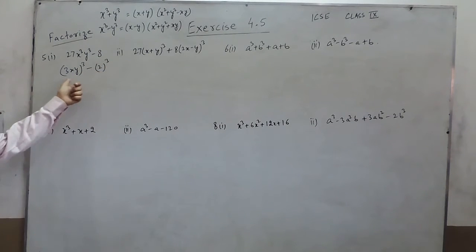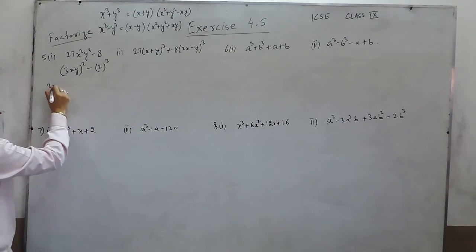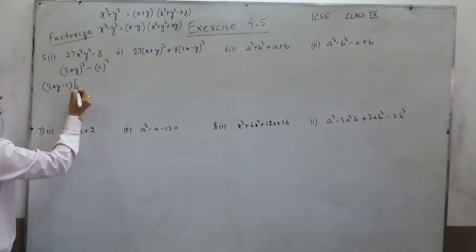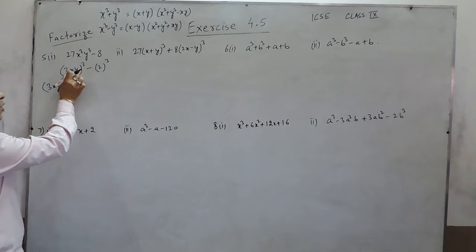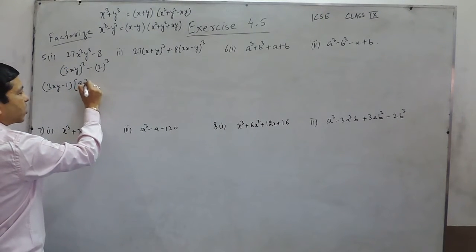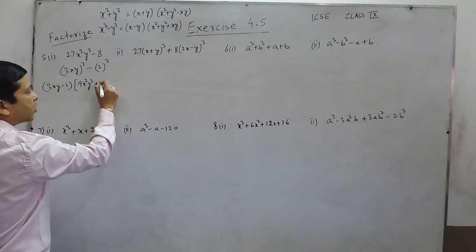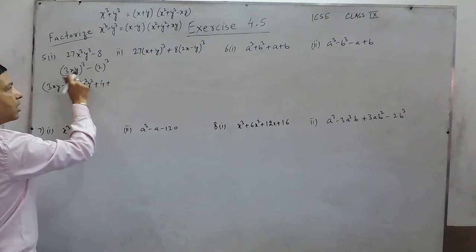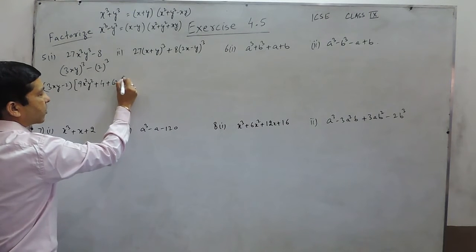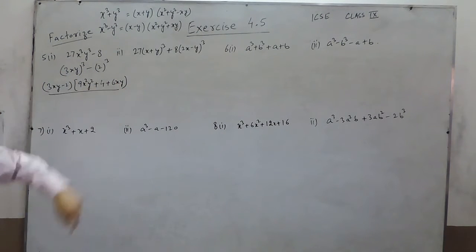We already know the formula for x³ minus y³. So the first factor is (3xy - 2). The second factor is: first term squared, that is 9x²y², plus second term squared, that is 4, plus the product of the two terms, that is 6xy. So this is the factorization.